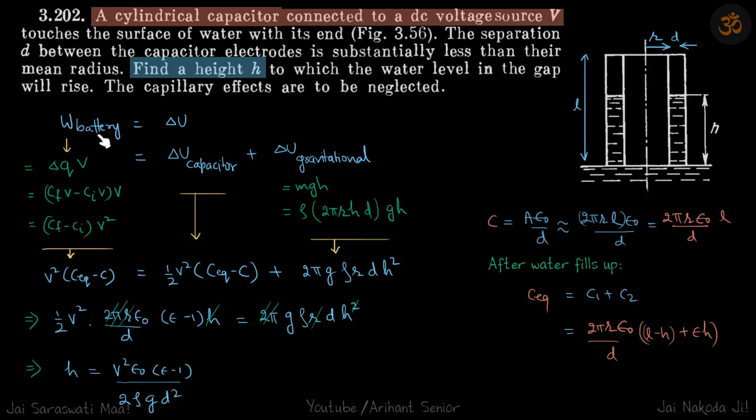Here there will be just two terms in our equation. The external work done on the system - so if you take the water itself inside the system, then you can say that work done by battery, this is the external work done, is equal to delta U, change in potential energy of the system.